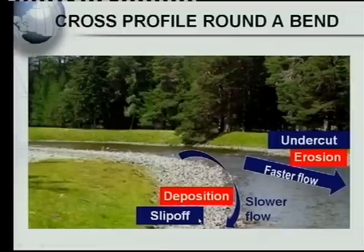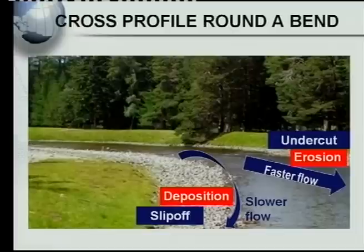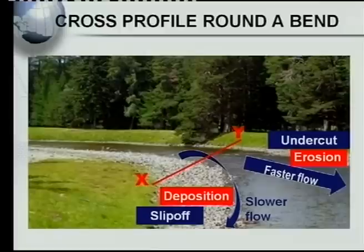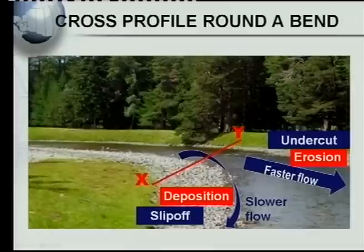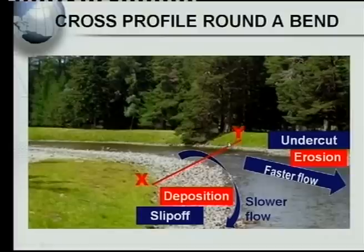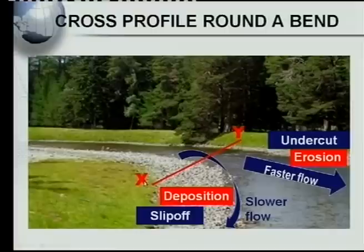The side where erosion occurs is called the undercut, and the side where deposition occurs is called the slip-off. When asked in exams to draw a cross profile of a river bend — say from X to Y — you must keep this in mind. Where there is deposition, the slope must be more gradual. Where there is erosion, the bank is being eaten away by the river, so you get a steep slope on that side.